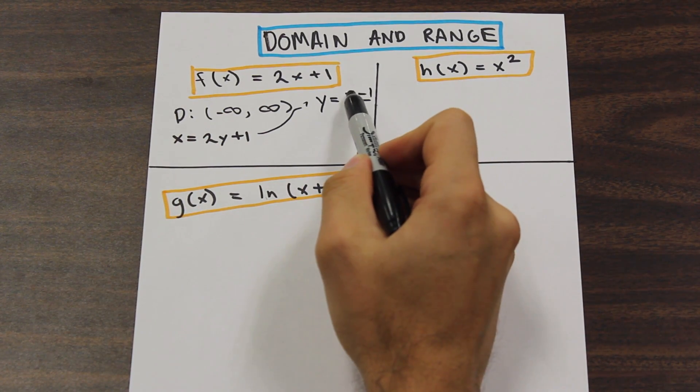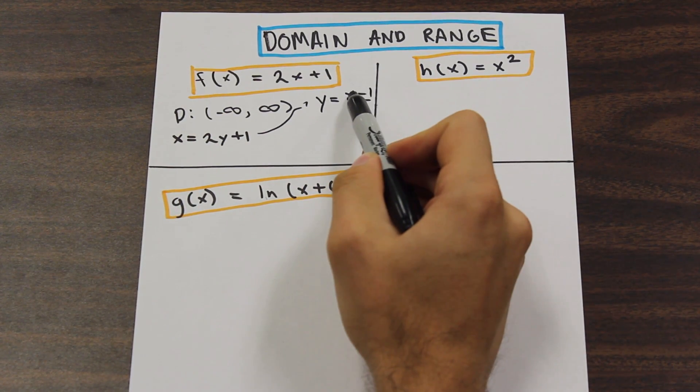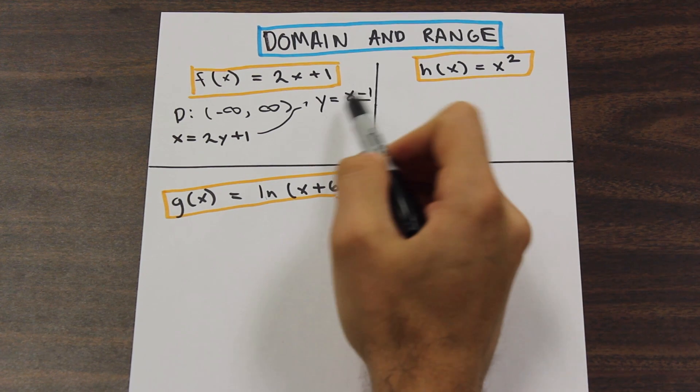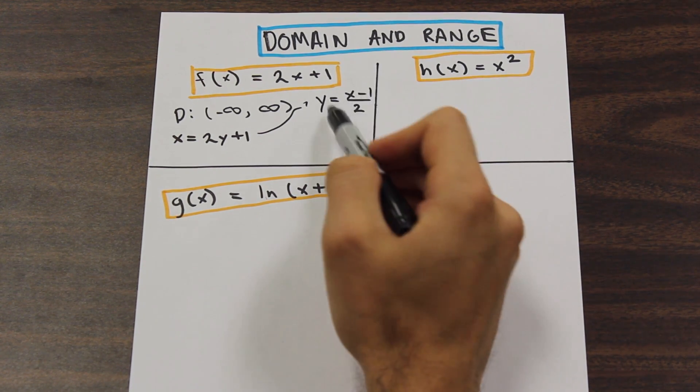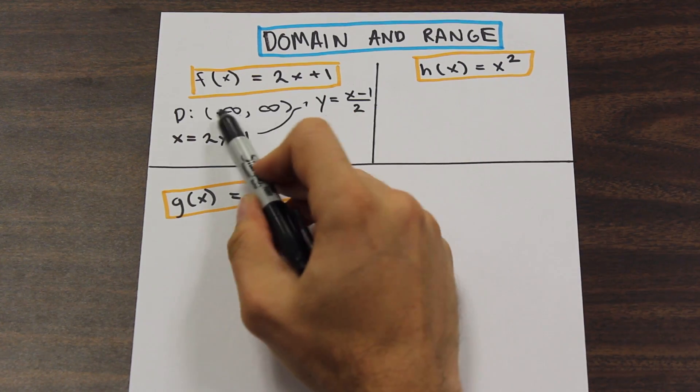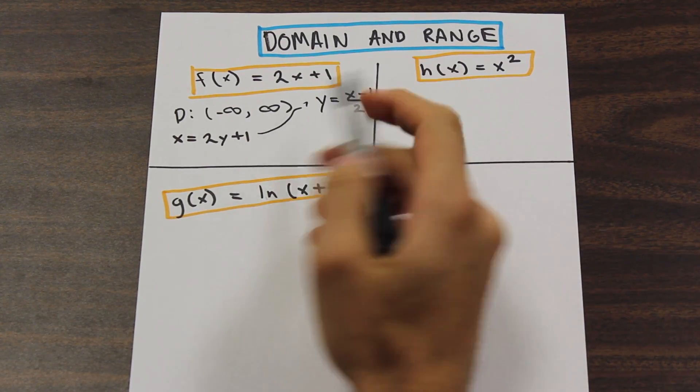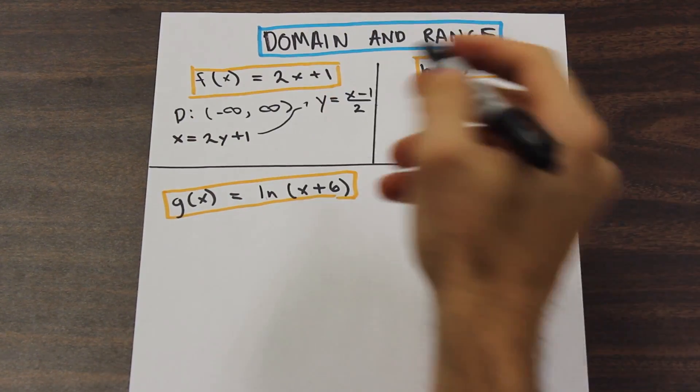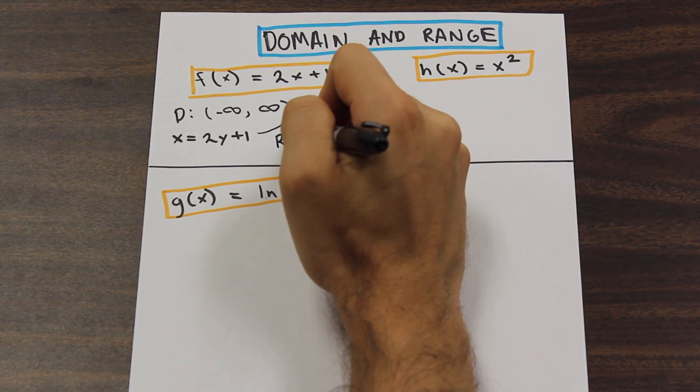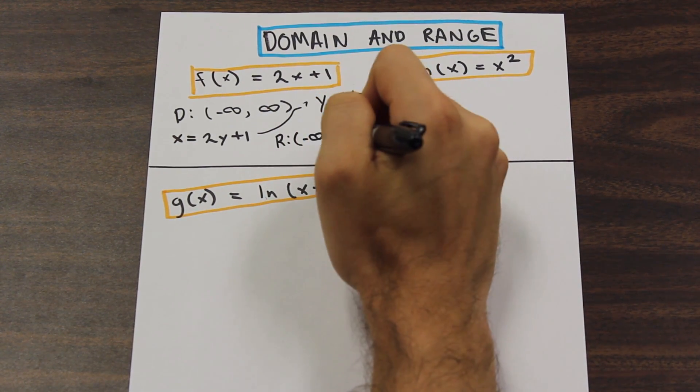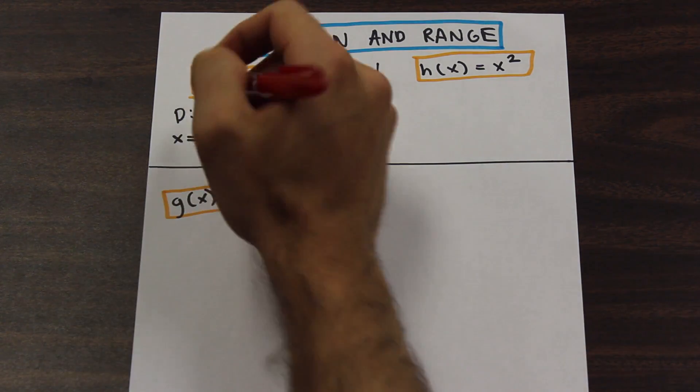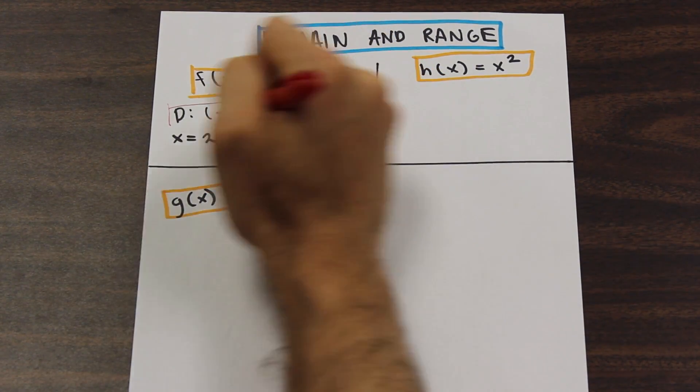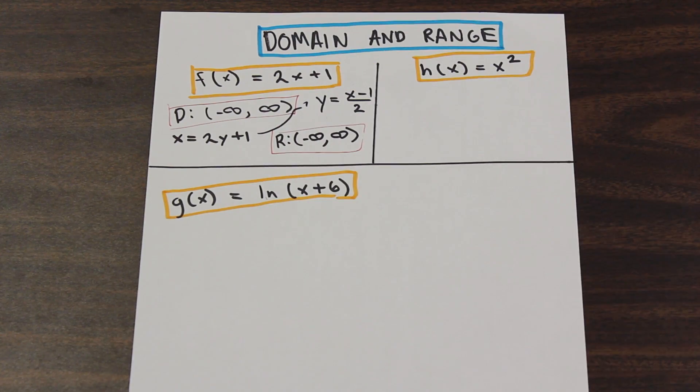As we can see here, there is no value that we can put into X that would make this function undefined. So as a result of that, the domain of this inverse function is infinity, or all real numbers, negative infinity to infinity, which means that the range is also negative infinity to infinity. That was simple enough.